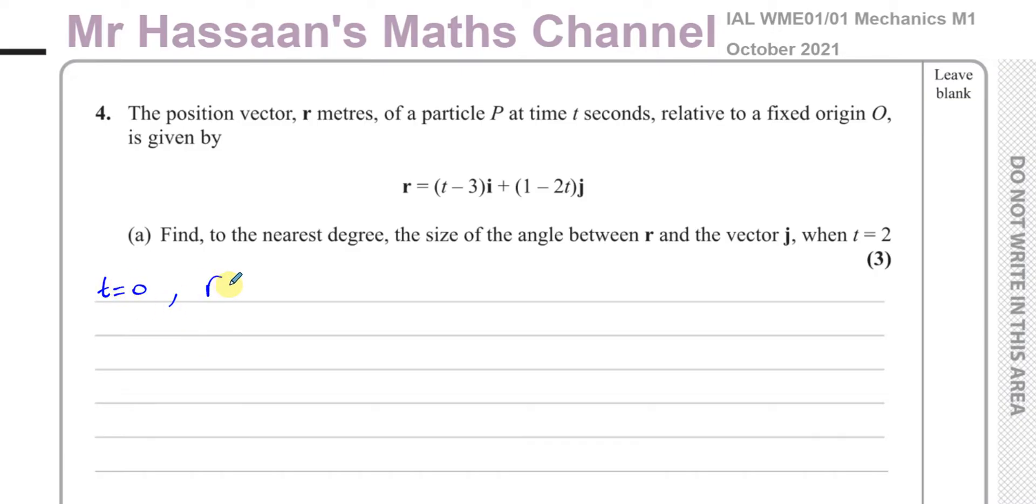Okay, the vector r... let's first of all write down what the vector r is. I like to use column vectors, it just organizes everything much better. So I'm going to put t minus 3 on the i component and 1 minus 2t on the j component. And when t is equal to 2, I'm going to find what r is.